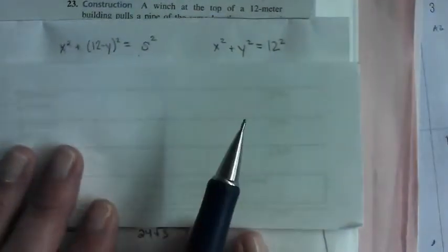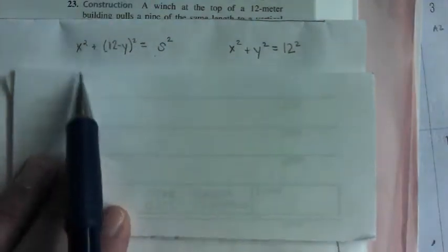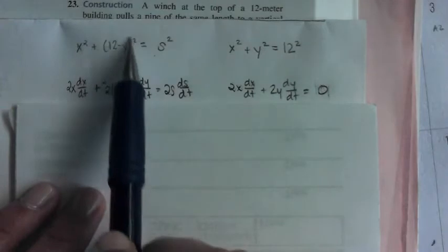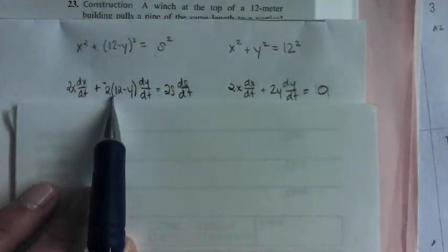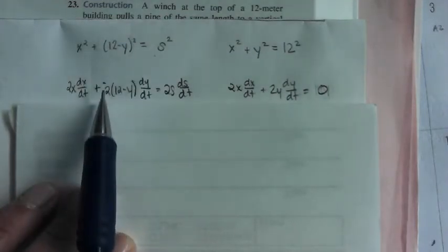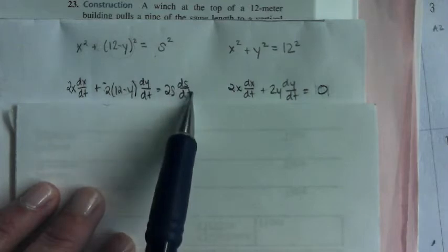So I just took these two equations and I differentiated both of them. So this 2X DX DT, this one was a little chain rule. So I brought the 2 out in front of the 12 minus Y times the derivative of what's inside, negative 1. So I threw a negative out in front. DY DT equals 2S DS DT.